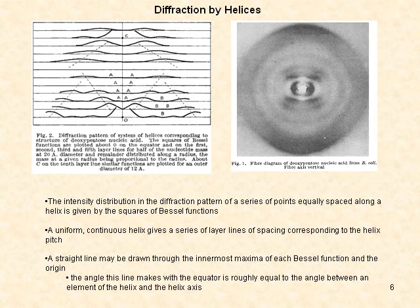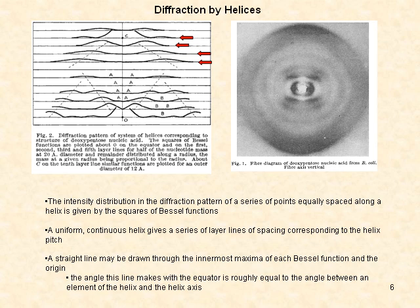The illustration to the left demonstrates how X-ray diffraction photos of helical structures are interpreted. The intensity distribution in the diffraction pattern of a series of points equally spaced along a helix is given by the squares of Bessel functions. A uniform continuous helix gives a series of layer lines of spacing corresponding to the helix pitch. A straight line may be drawn through the innermost maxima of each Bessel function from the origin, and the angle this line makes with the equator is roughly equal to the angle between an element of the helix and the helix axis.